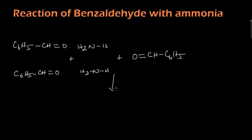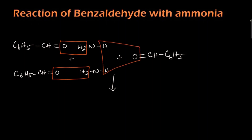When we react these, we get a complex product. What happens is: this oxygen and these two hydrogens form a water molecule, this oxygen and these two hydrogens form another water molecule, and these two hydrogens and this oxygen form a third water molecule. So three water molecules will be eliminated, and the remaining parts condense into a complex product.